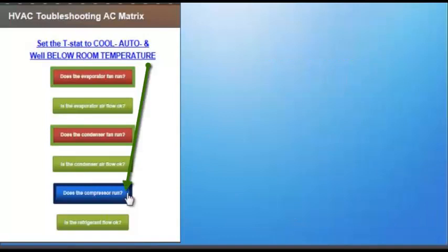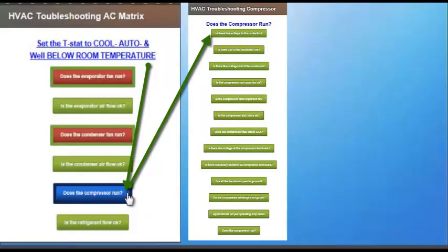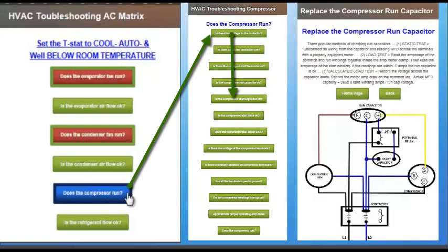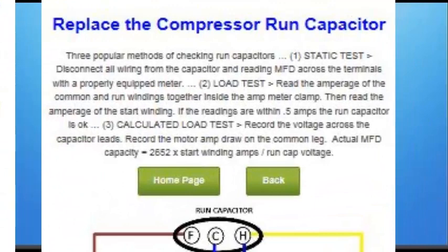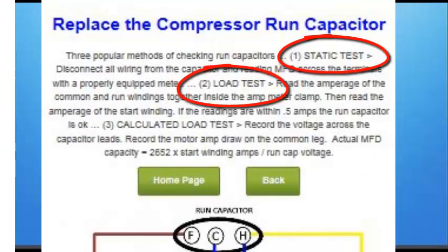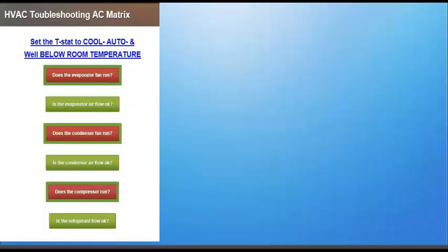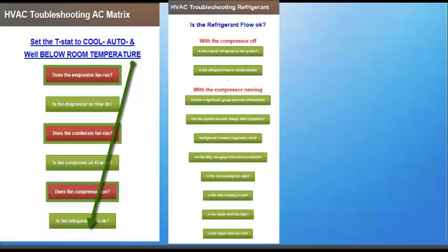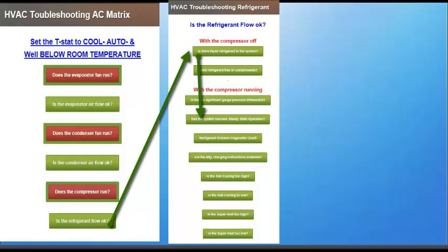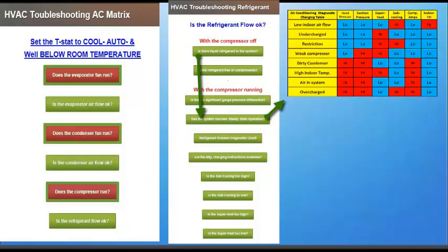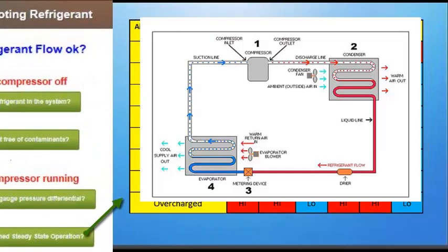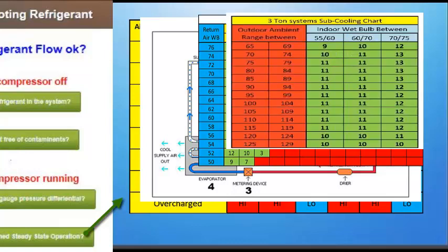Process can define the quickest and most efficient path to when a technician should suspect a problem with a capacitor. Once there, however, the technician must know the procedure for testing a capacitor. The matrix provides technicians with three different procedures for testing run capacitors: a static test, an operating load test, and a calculated load test. In another example, process can define the quickest and most efficient path to when a technician should suspect a problem with refrigerant flow. Once there, the technician must know the procedures for evaluating and correcting refrigerant flow and refrigerant charge problems. The matrix provides technicians with a refrigerant problem diagnostic chart, a refrigerant cycle diagram, and generic charging charts as aids in this transition between process and procedure.